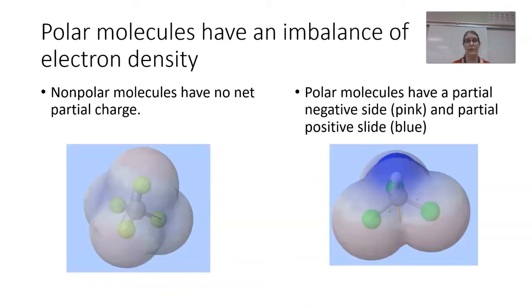Polar molecules then have an imbalance of electron density. A non-polar molecule has no overall net partial charge. So you can see how with the carbon tetrachloride here, you just kind of end up with an overall light purple-y sort of blob. Where on my polar molecule I do have a partial negative side, the pinks down here are the partial negative, and a partial positive side where I have less electron density. And you can see the overall net dipole is this yellow arrow pointing down.